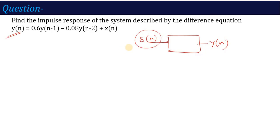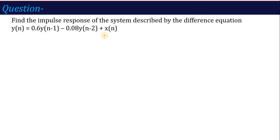When we apply the impulse function at the input, then the output received, we call Y(N) the impulse response, that is H(N). So in the same case, there is a system defined by a difference equation, defined by its impulse response. If I want to calculate the impulse response, then the input X(N) given is delta of N, and on that basis I have to calculate the response Y(N).